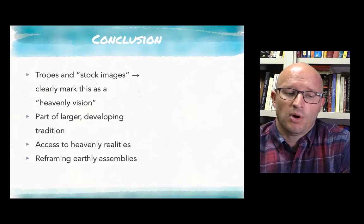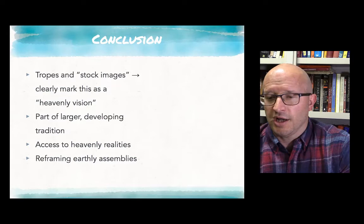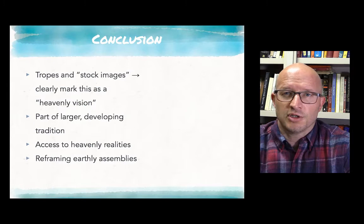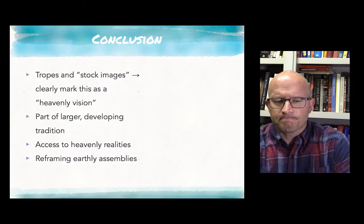The second thing is that we would understand Revelation 4 and 5 as part of this larger and developing tradition. Again, I'm not interested in trying to track levels of dependence—which is earlier, does Revelation use 1 Enoch or the Ascension of Isaiah or vice versa—but I think it's important to recognize that Revelation 4 and 5, that this vision of the heavenly reality, is part of this larger tradition, it is a representative of this larger tradition.